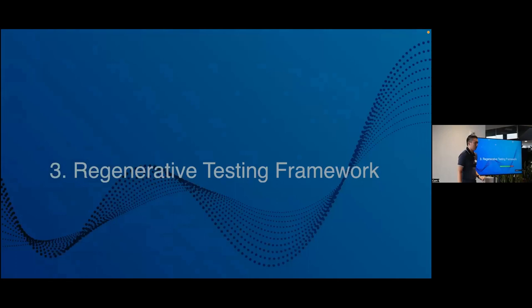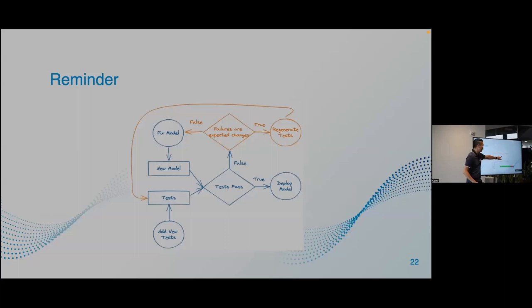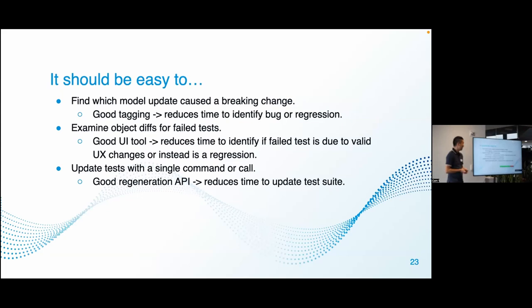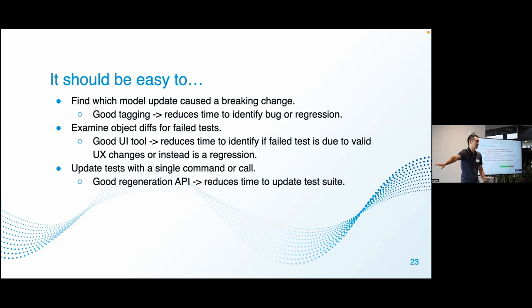Here's why tagging is important — it's mainly for your testing framework. We need to figure out if UX changes are valid, and if they are, have an easy way of updating tests that's painless and doesn't waste engineer time. A few guiding principles: it should be easy to find which model update caused the breaking change — good tagging makes this so much easier. Have an easy way of examining object diffs or failed tests with some kind of UI tool — it can be as simple as pretty-printing results in your terminal. And it should be easy to update tests with a single command.